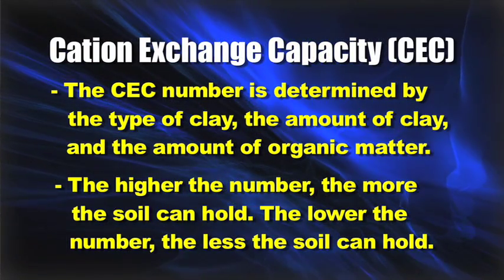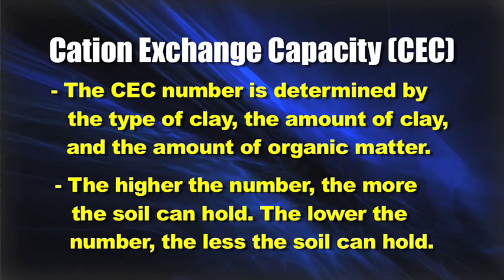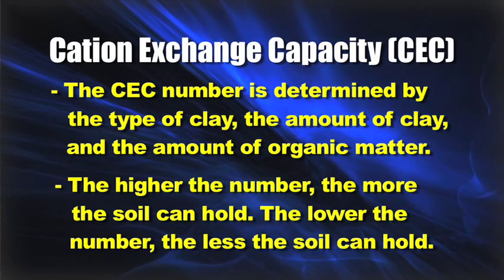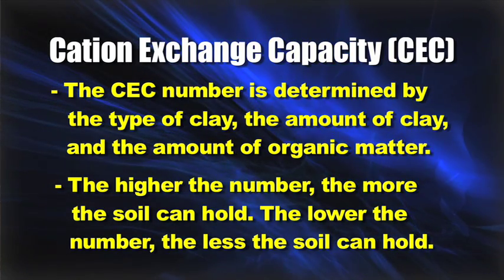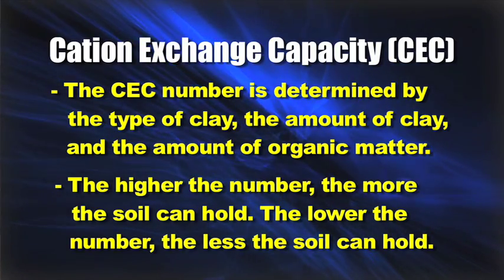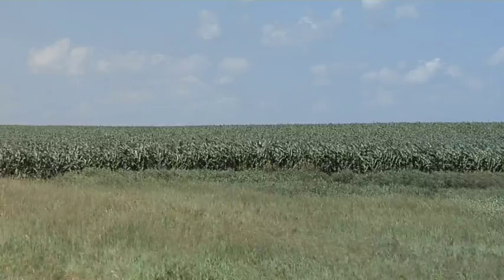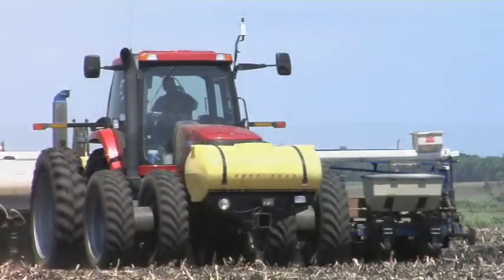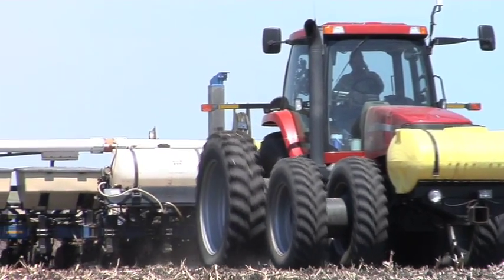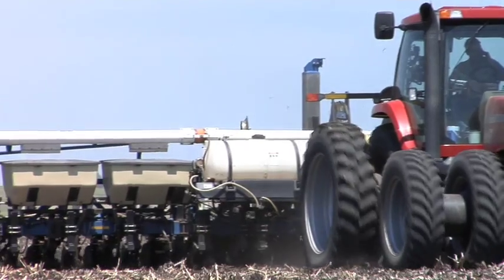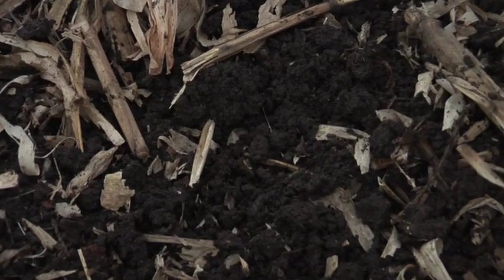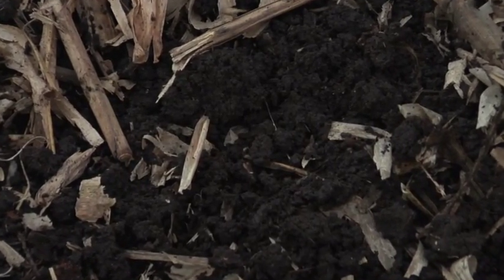Cation exchange capacity is really a measure of three things: the type of clay in your soil, the amount of clay, and the amount of organic matter. The higher the number, the more your soil can hold; the lower the number, the less it can hold. For small grain and corn farmers, this tells you the holding capacity of your soil — how many nutrients you can apply at or before planting time.